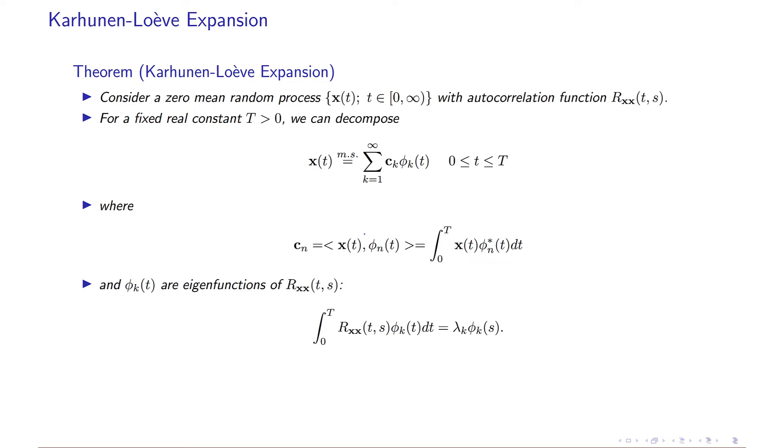And the phi k are eigenfunctions of your autocorrelation functions, so that means that the dot product of these over t is equal to that. So the theorem says that this sort of equation, if you find a solution of this one, then you can write this expression.